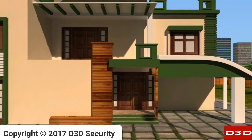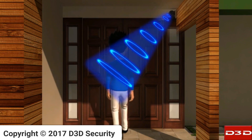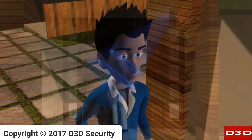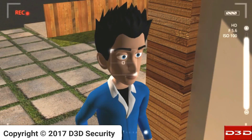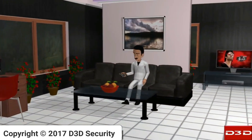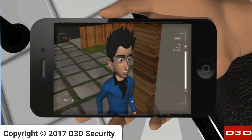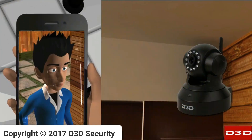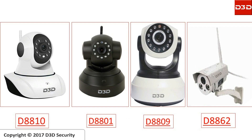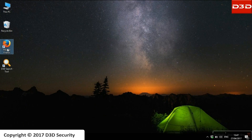The motion detection function ensures no one will be able to enter your home without your permission. Whenever any motion is detected, the camera will send alerts to your mobile phone application as well as to your email ID with a snapshot. This video will explain how to set the motion detection feature in D3D Wi-Fi IP camera models D880, D8801, D8809, and D8862.